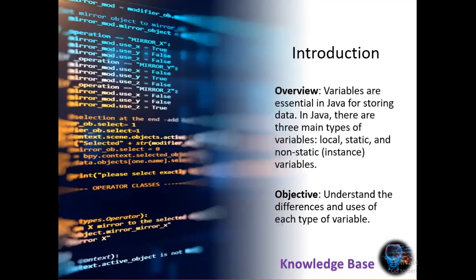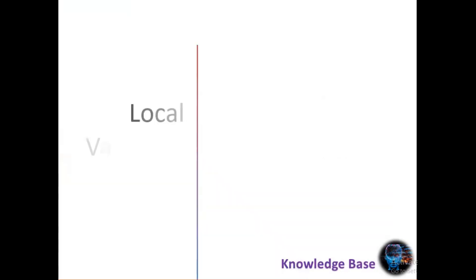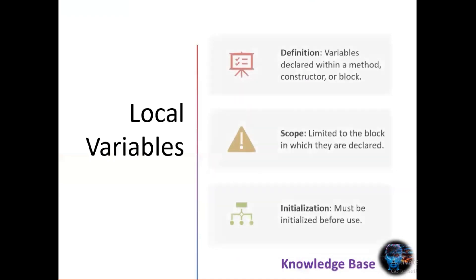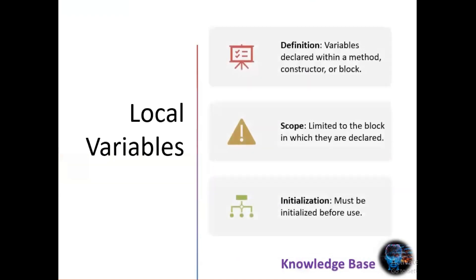First, let's talk about local variables. Local variables are those declared within a method, constructor, or block. They are only accessible within the scope they are declared in, meaning they are not visible outside of that block. One key point to remember is that local variables must be initialized before they are used.